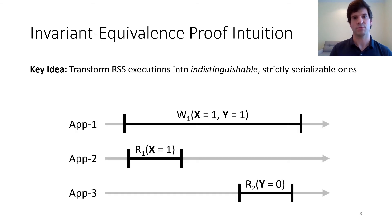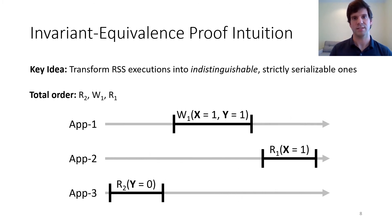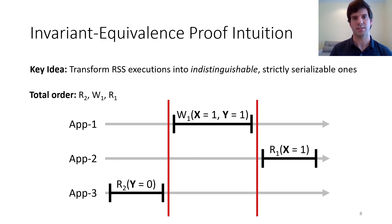Let's consider the example we showed previously. RSS guarantees that there exists some total order of transactions — in this case, the order is R2, W1, R1. To transform this into a strictly serializable execution, we can stretch and shrink the time between events at each process until two things happen: first, the transactions don't overlap in real time, and second, the order of transactions matches the total order. Because the total order respects causality, we're guaranteed this can be done without reordering any execution steps at any process. So this execution is indistinguishable from the original RSS one, and now that the transactions don't overlap in real time, this execution satisfies strict serializability.